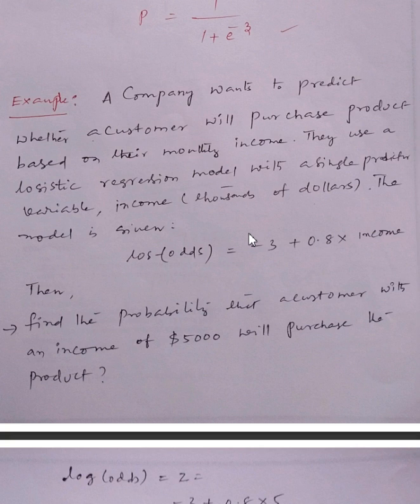The slope is 0.8. So a0 is -3 and a1 is 0.8 times income.